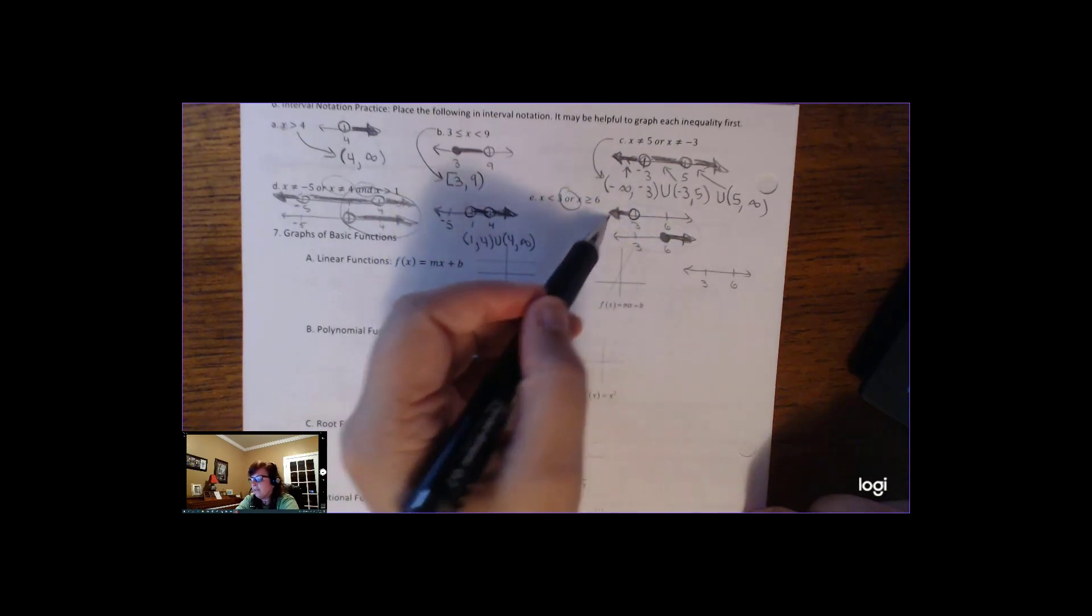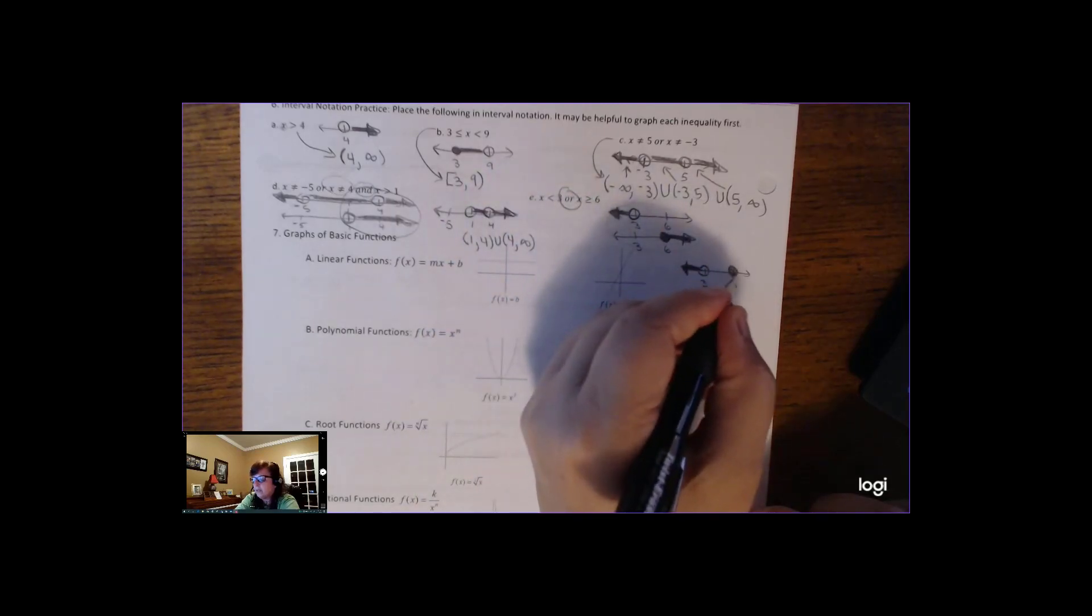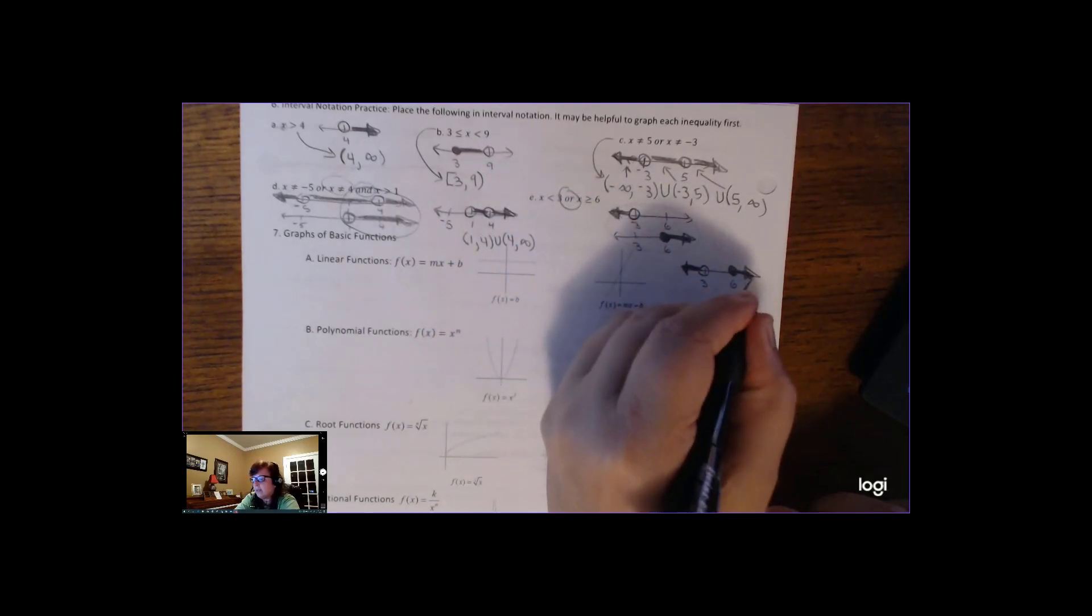Or just means that if it's a solution to one, then it's a solution to the other. So as long as it's less than 3 or x is greater than or equal to 6, it's a solution. So when you have an or, you basically just combine all your answers. So I'm going to collect all my x is less than 3 answers and I'm going to collect all my x is greater than or equal to 6 answers. And that's the number line.